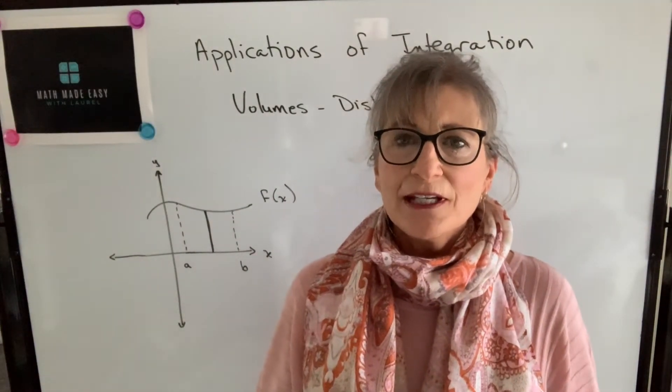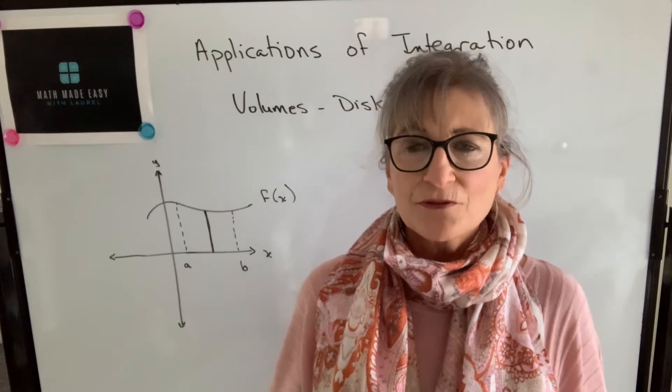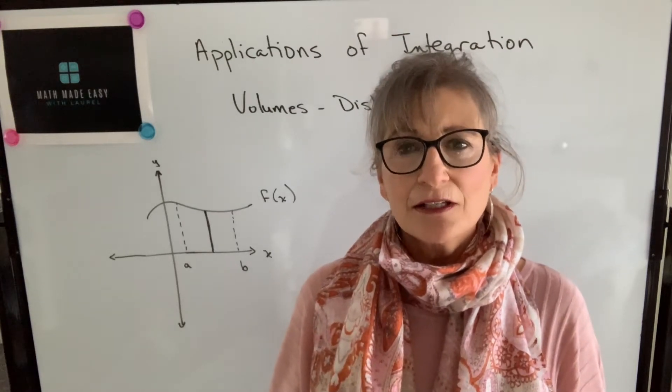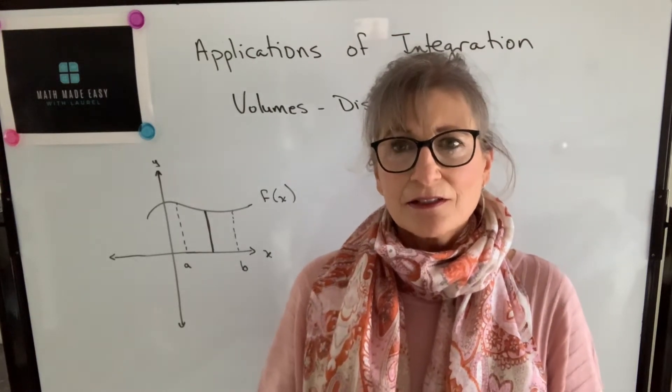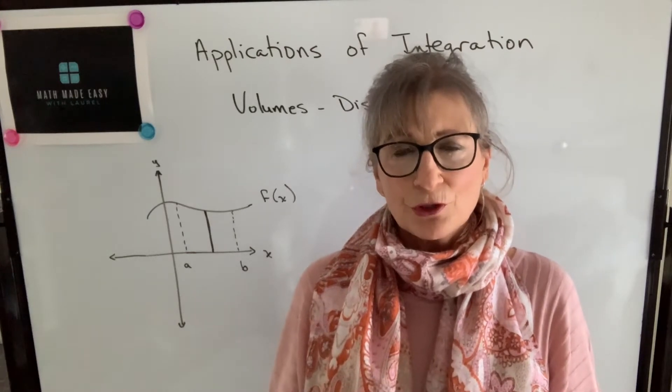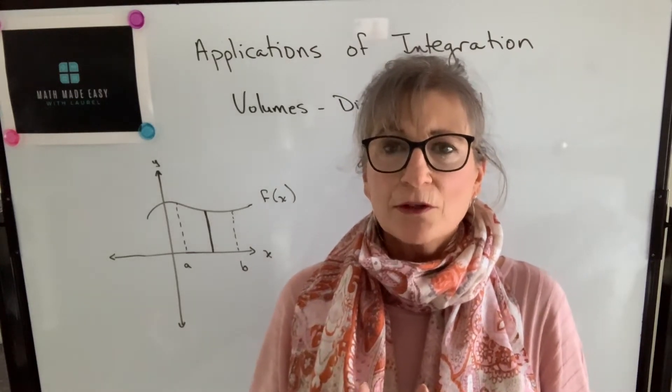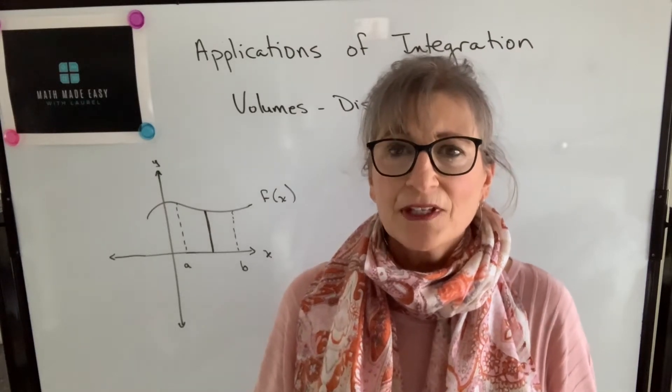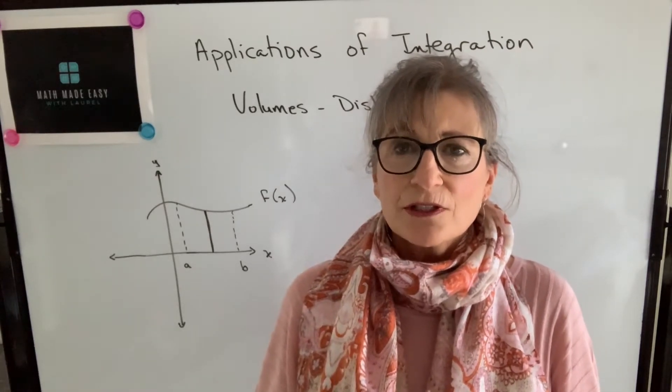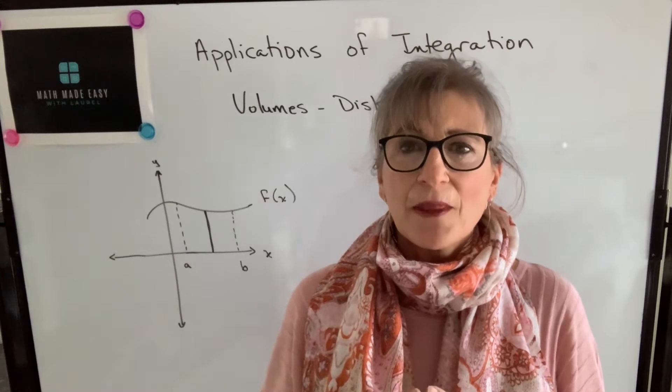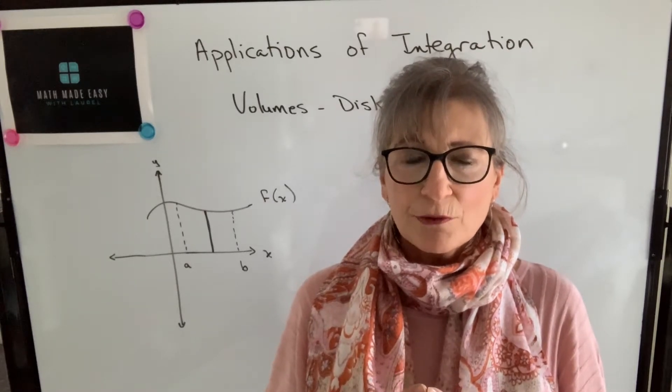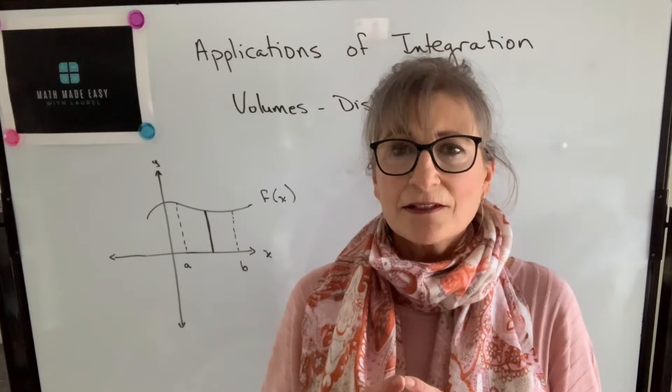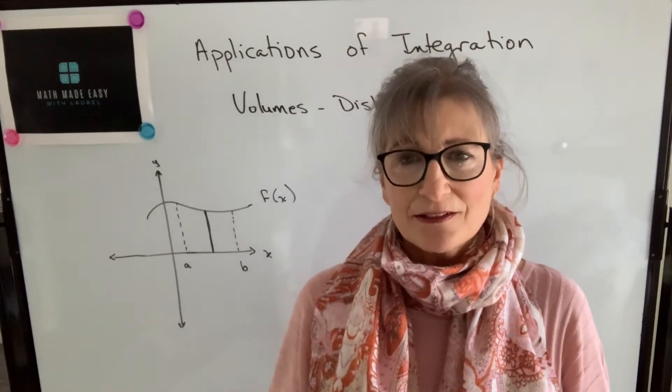What we're going to start doing now is calculating volumes of solids generated by taking certain areas described by different curves and rotating those around either the x-axis, the y-axis, or even another line. So to start with, we're going to start with the easiest volume, and that's the volume that's generated by taking an area bounded by one of the axes, and it's rotating around that axis.